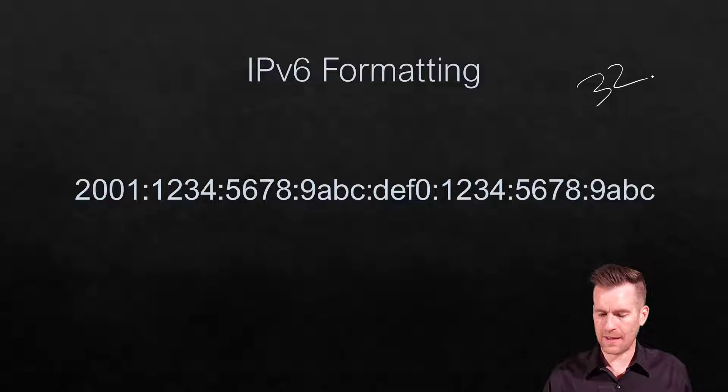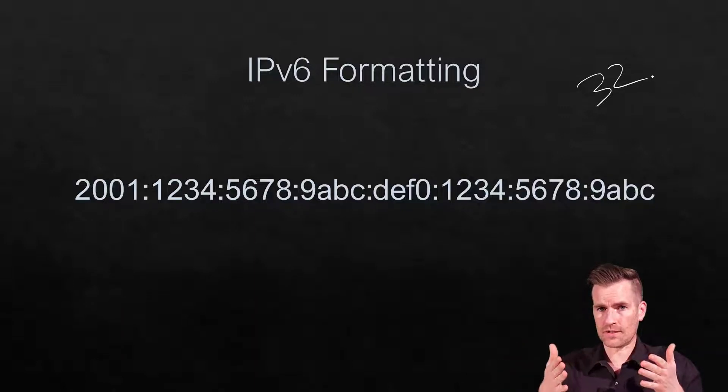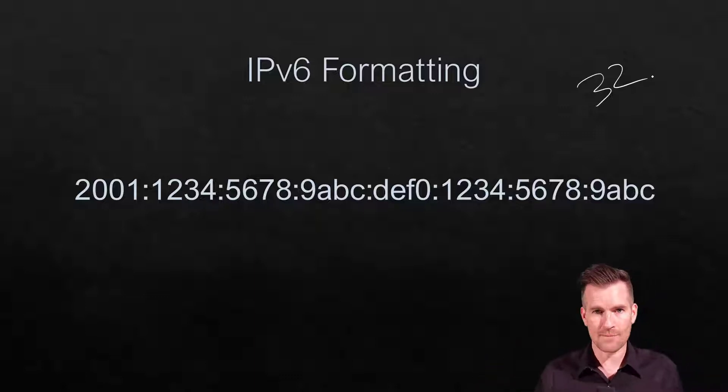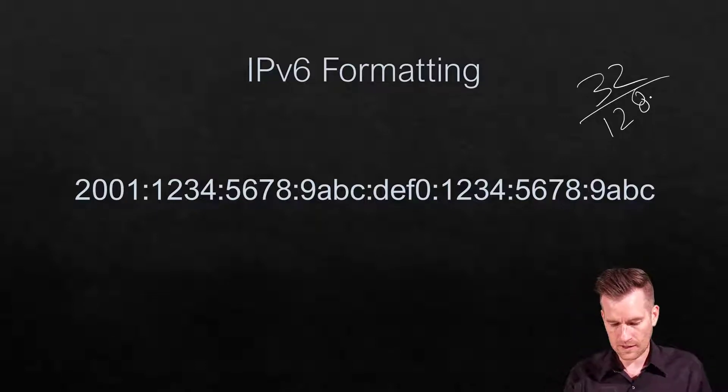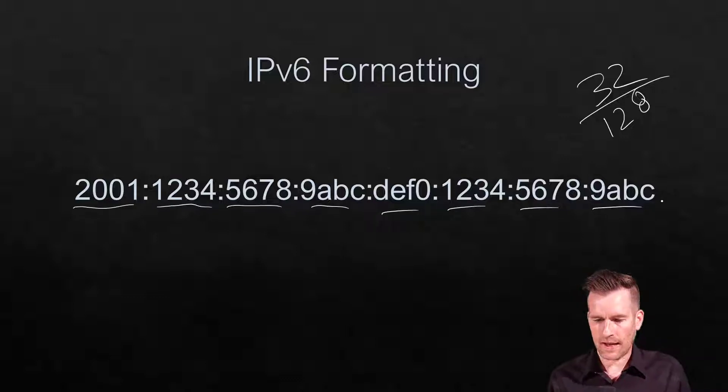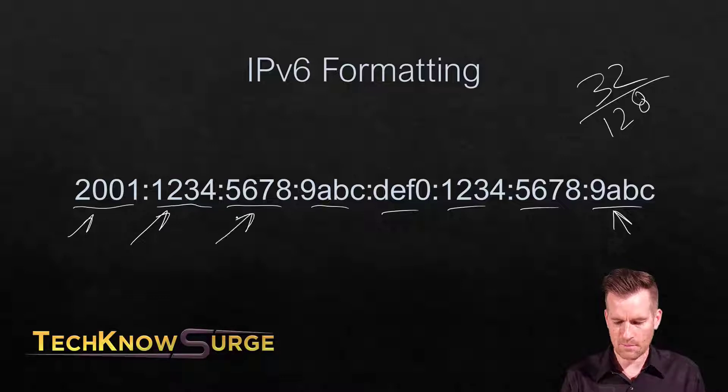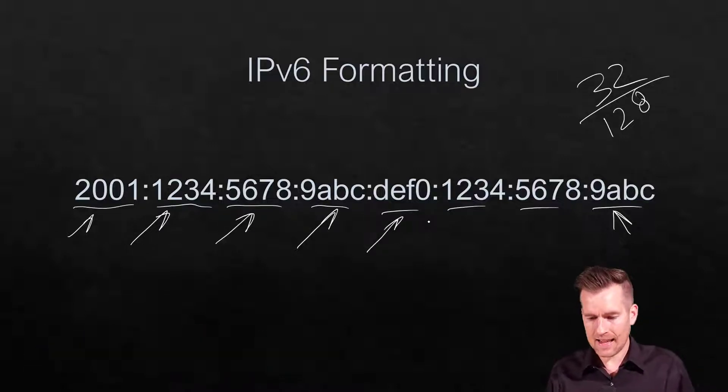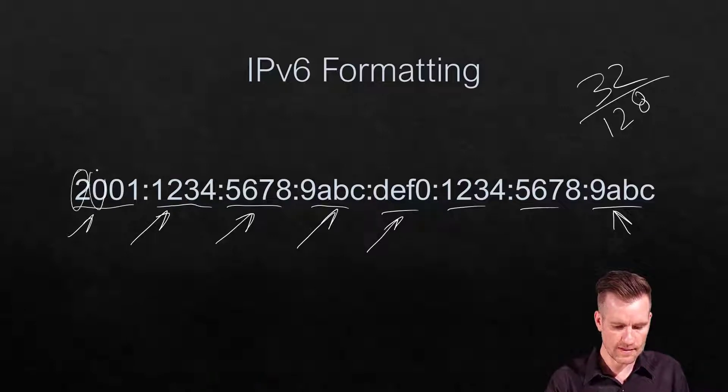IPv4 addresses have 32 bits broken down into four sections called octets, with eight bits per octet. That's fine for 32-bit addresses, but IPv6 has 128 bits that need to be represented. IPv6 is broken down into eight different sections. Each section is called a hextet, and each hextet has 16 bits.